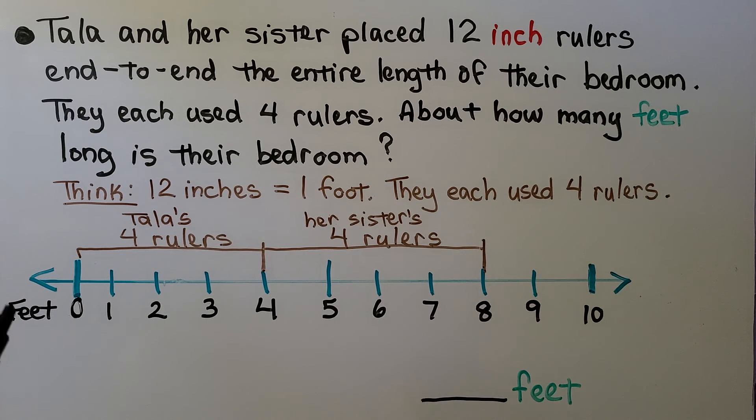So using a number line marked with feet. This is 0 feet, 1 foot, 2 feet, 3 feet, 4 feet. So Tala's 4 rulers, because 12 inches is 1 foot, that would be 4 feet.